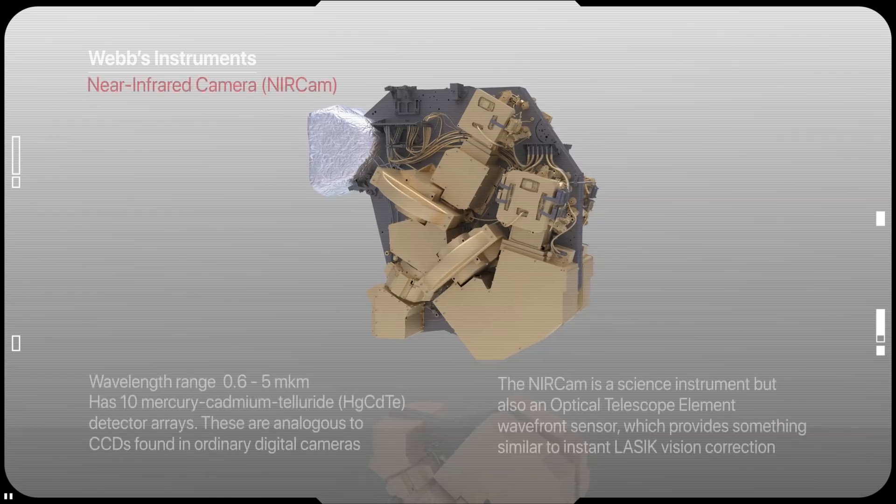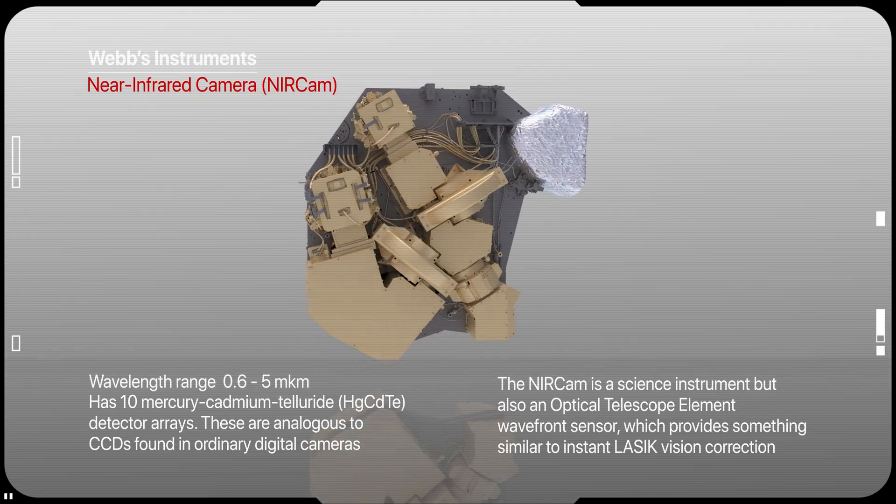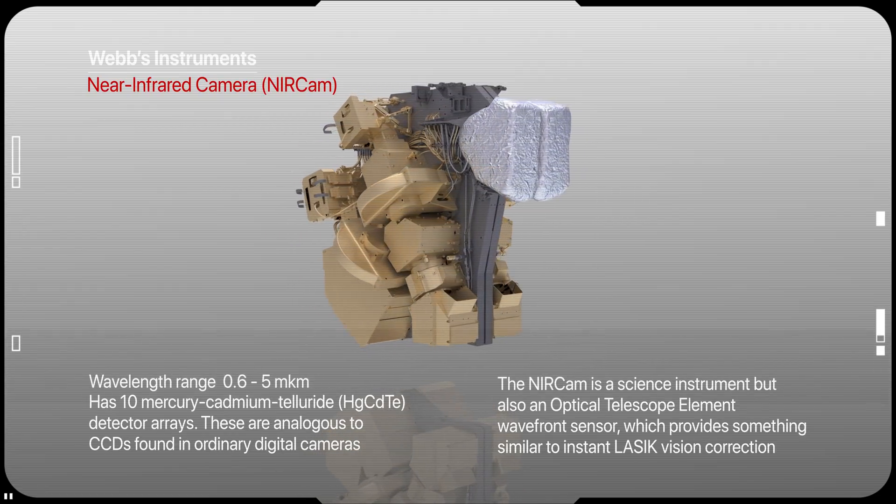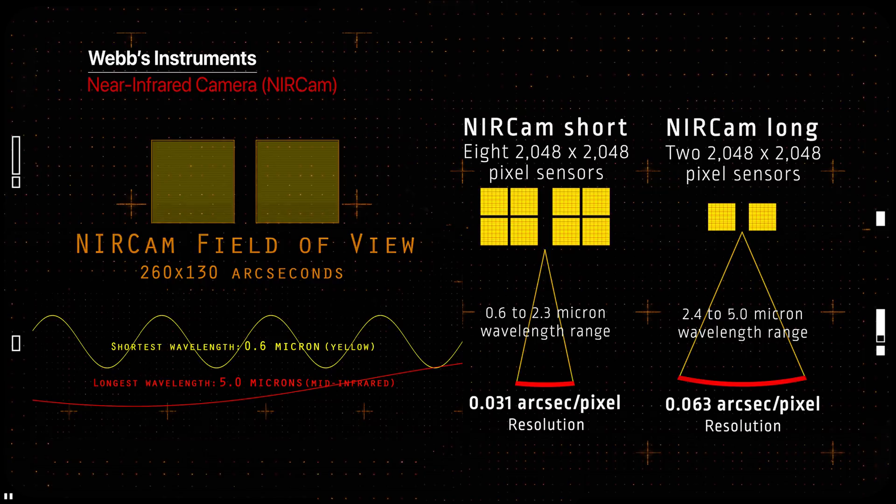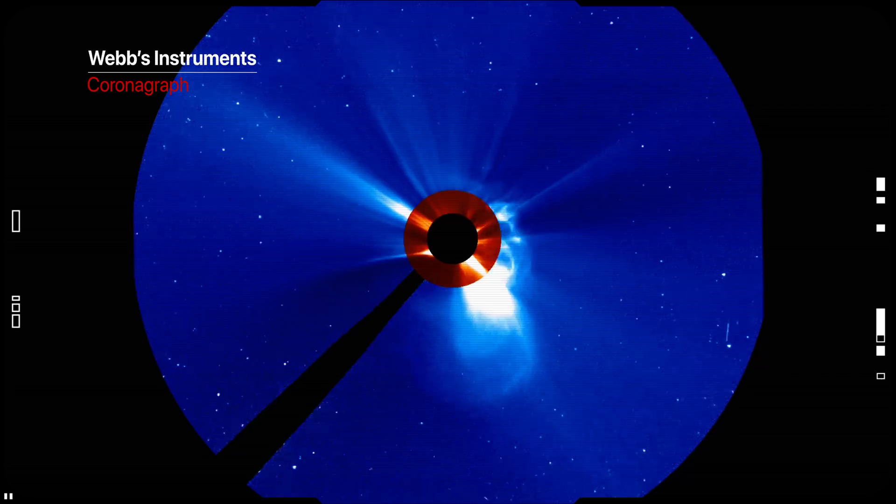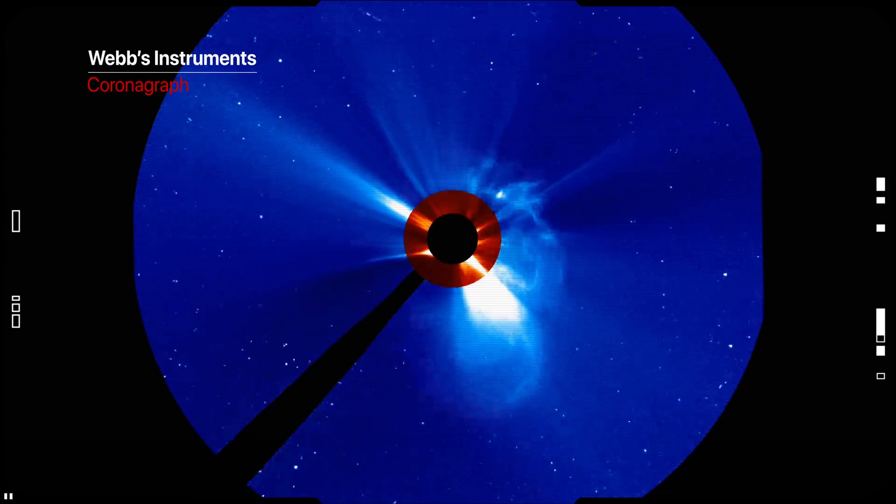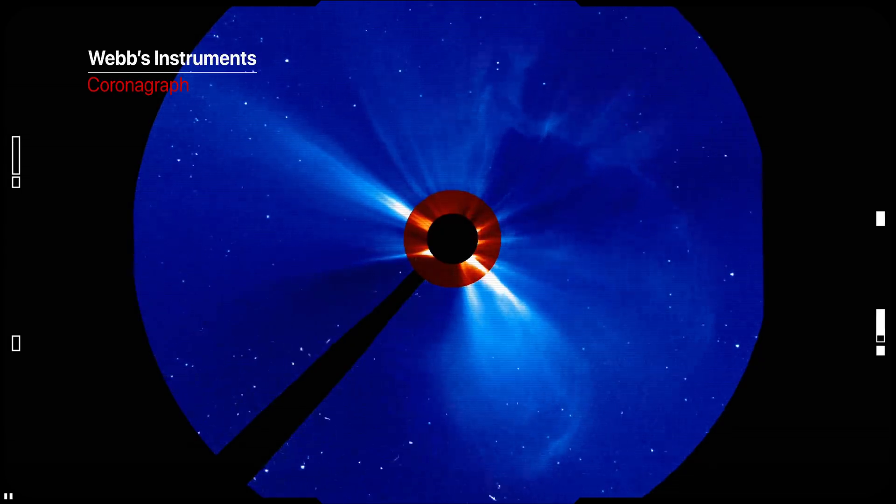NIRCam provides high-resolution imaging and spectroscopy for a wide variety of investigations. It's Webb's primary imager and operates over a wavelength range of 0.6 to 5 micrometers. NIRCam is equipped with coronagraphs, instruments that allow astronomers to take pictures of very faint objects around central bright objects by blocking the bright light source, useful in investigations seeking to determine characteristics of planets orbiting nearby stars.